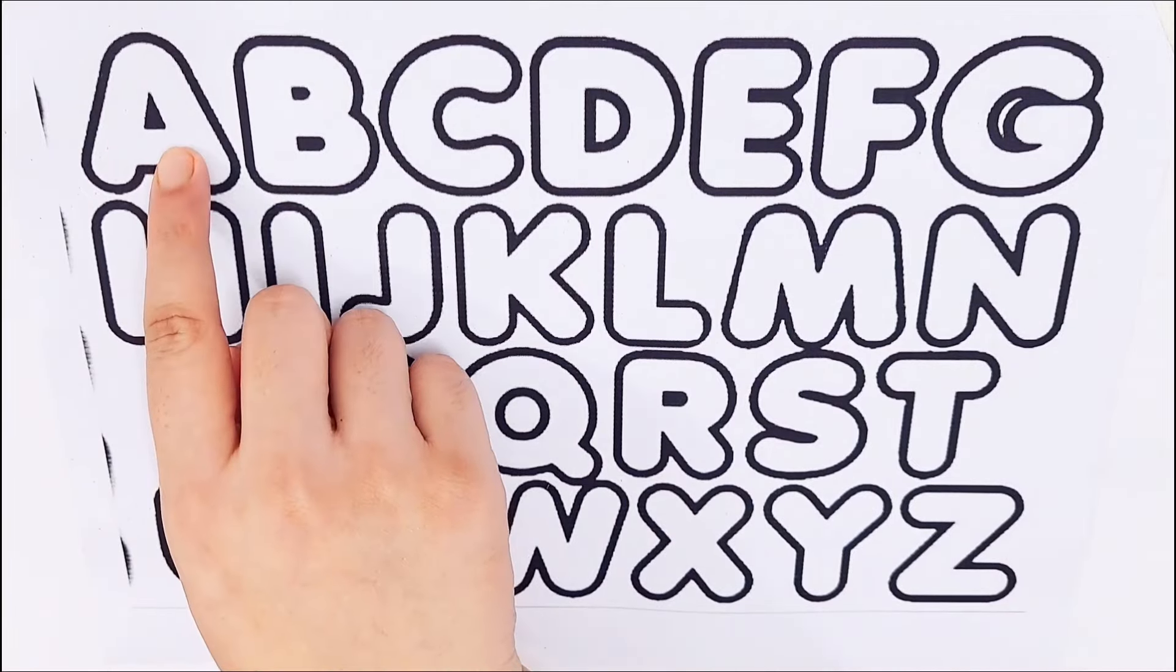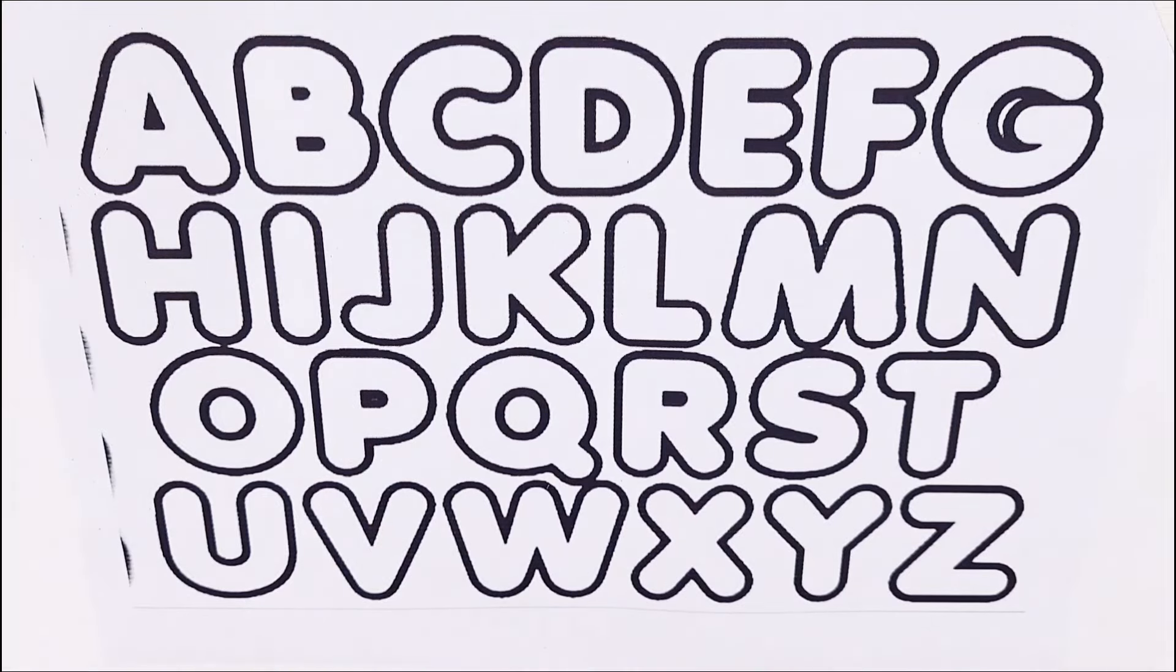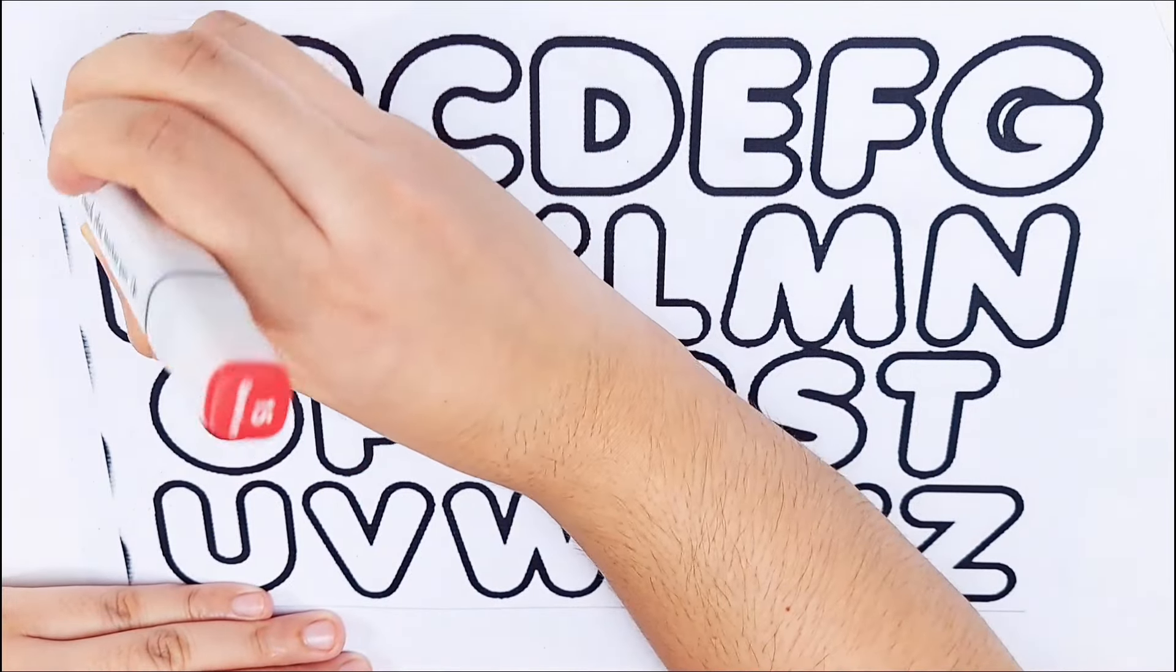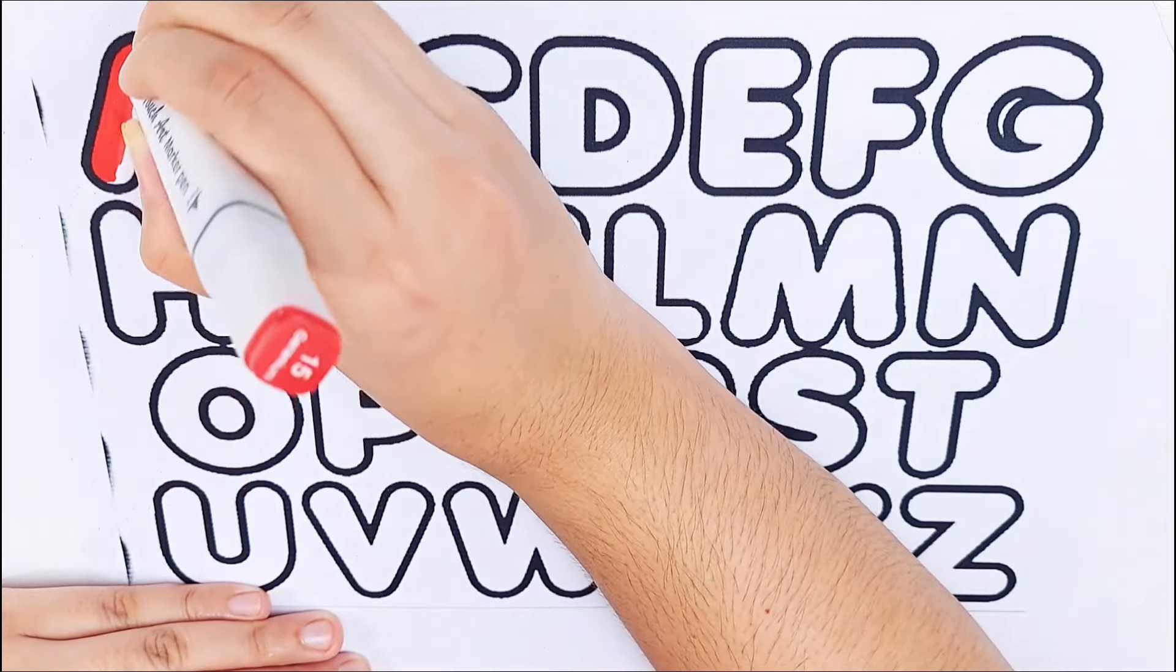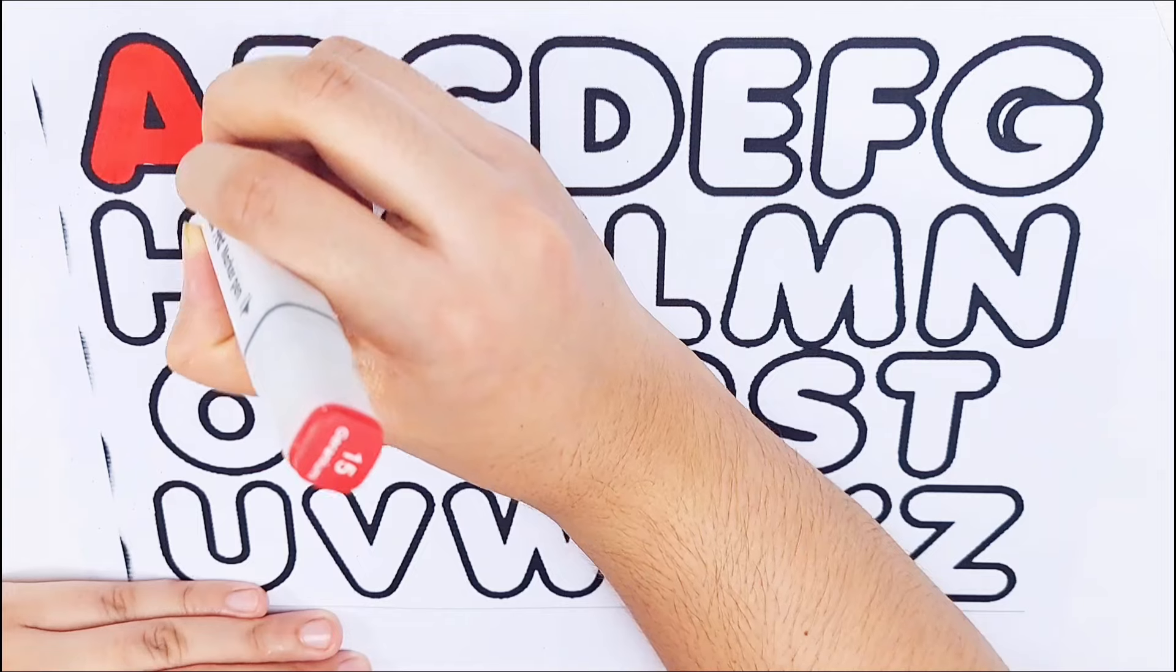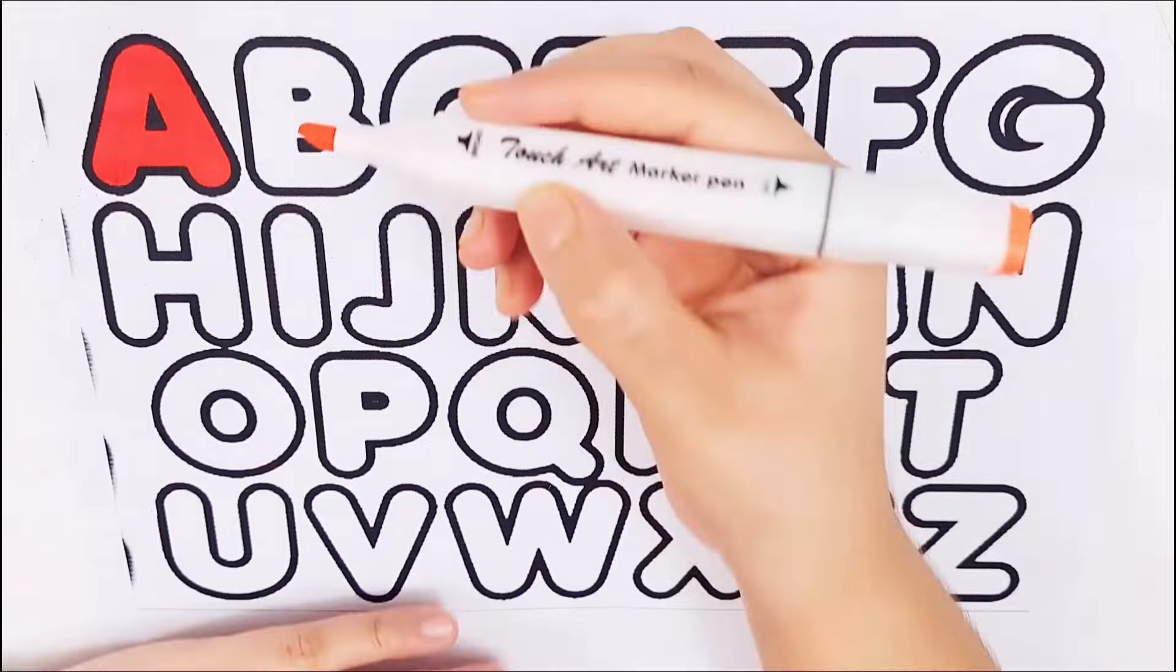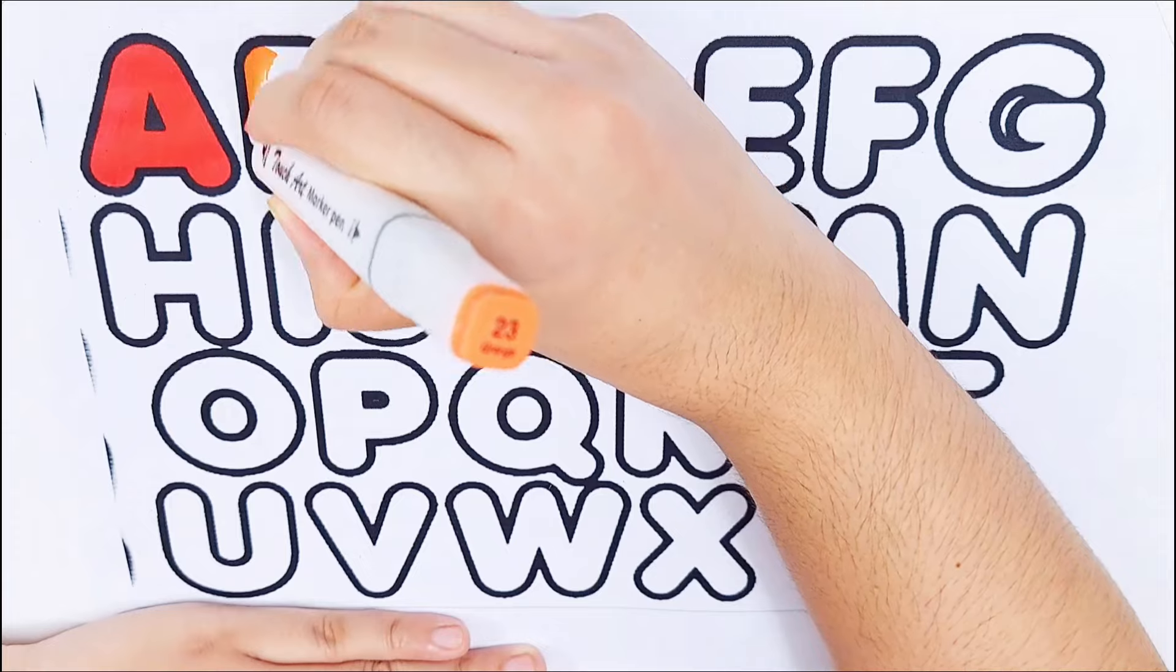Let's learn some alphabets. A, B, C, D. Red color, A, A for Apple. Orange color, B, B for Banana.